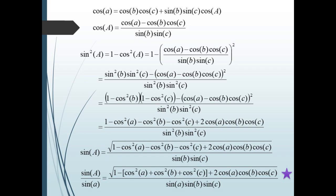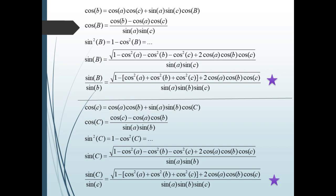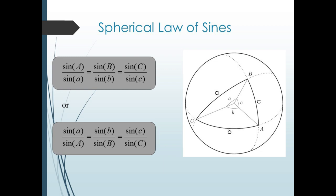Notice that on the right-hand side, the sides a, b, and c can all be rearranged without changing the value. Our choice of the first version of the law of cosines was arbitrary. Using the second version and applying the same logic, we get sin B / sin b = the exact same fraction. Likewise, using the third version, sin C / sin c is also equal to this fraction. Hence, these three ratios are all equal, giving us the spherical law of sines.